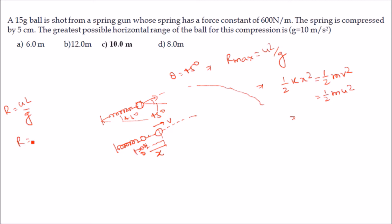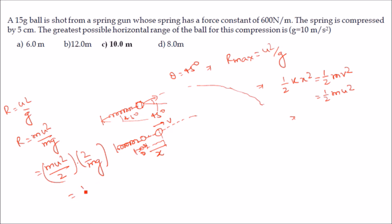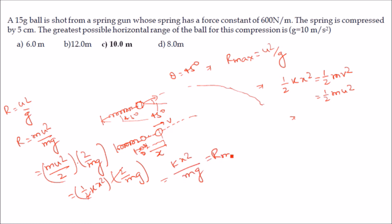We multiply the range expression by m/m to get R = mu²/mg. Since ½mu² = ½kx², we have mu² = kx². Therefore R_max = kx²/(mg), which gives us the maximum range.